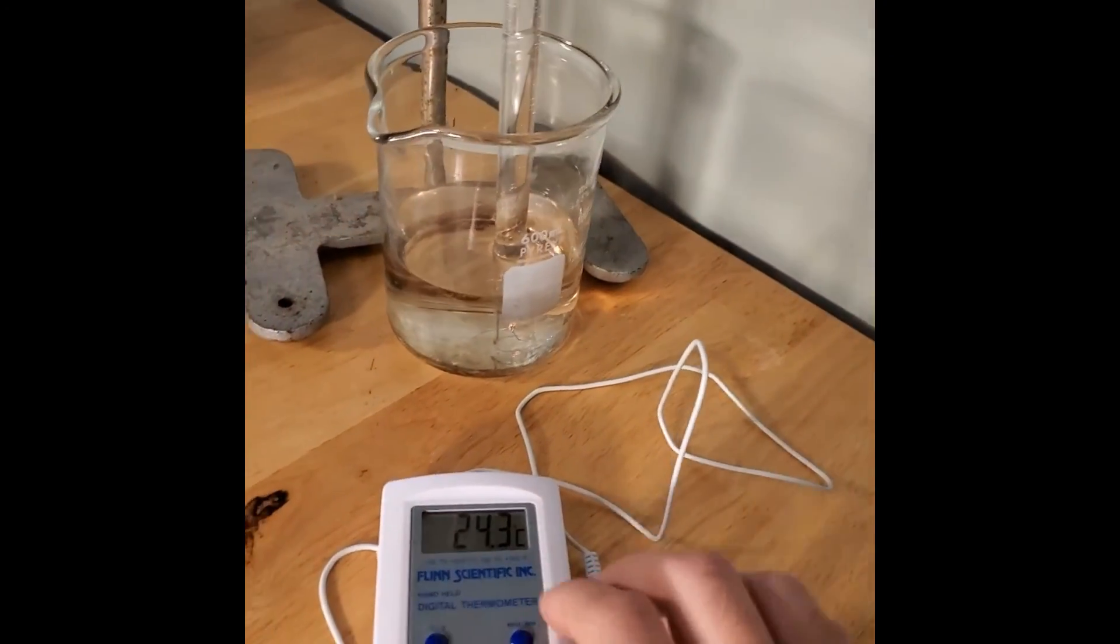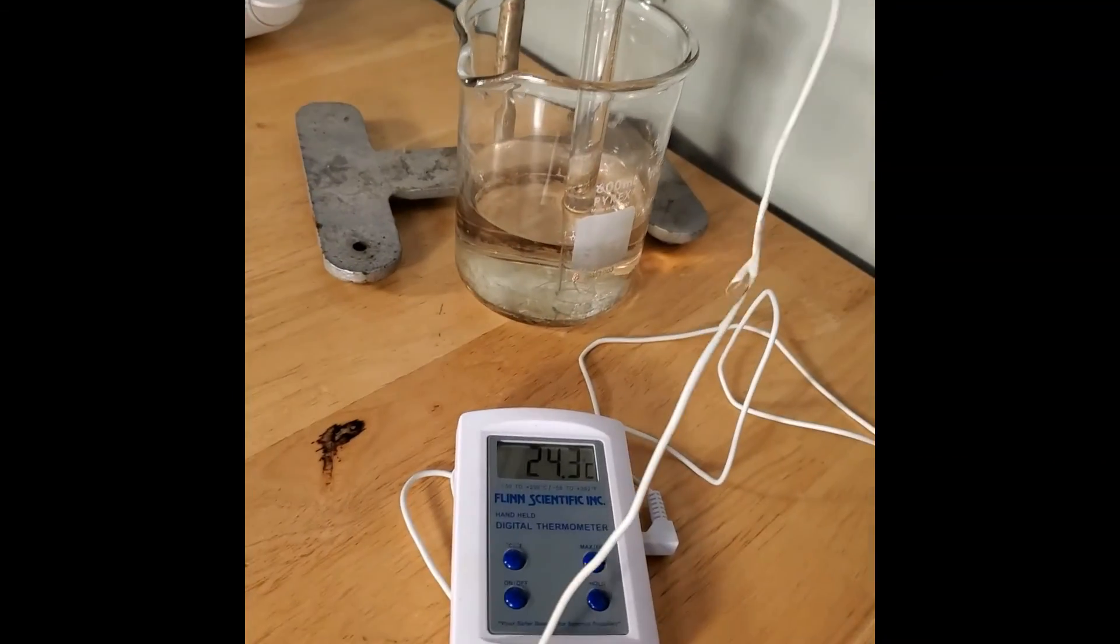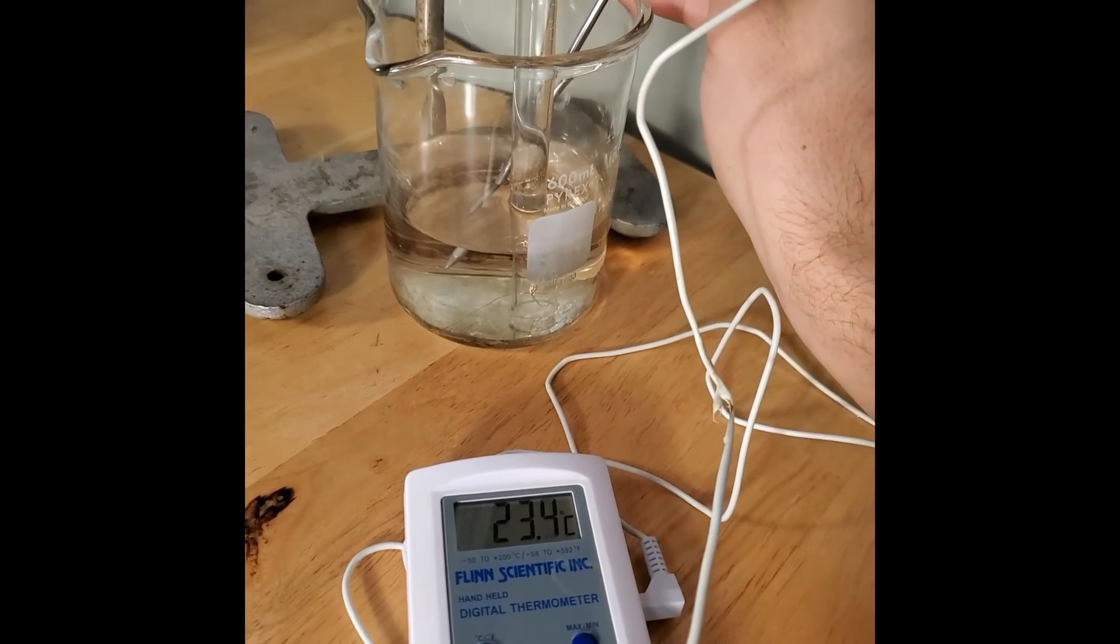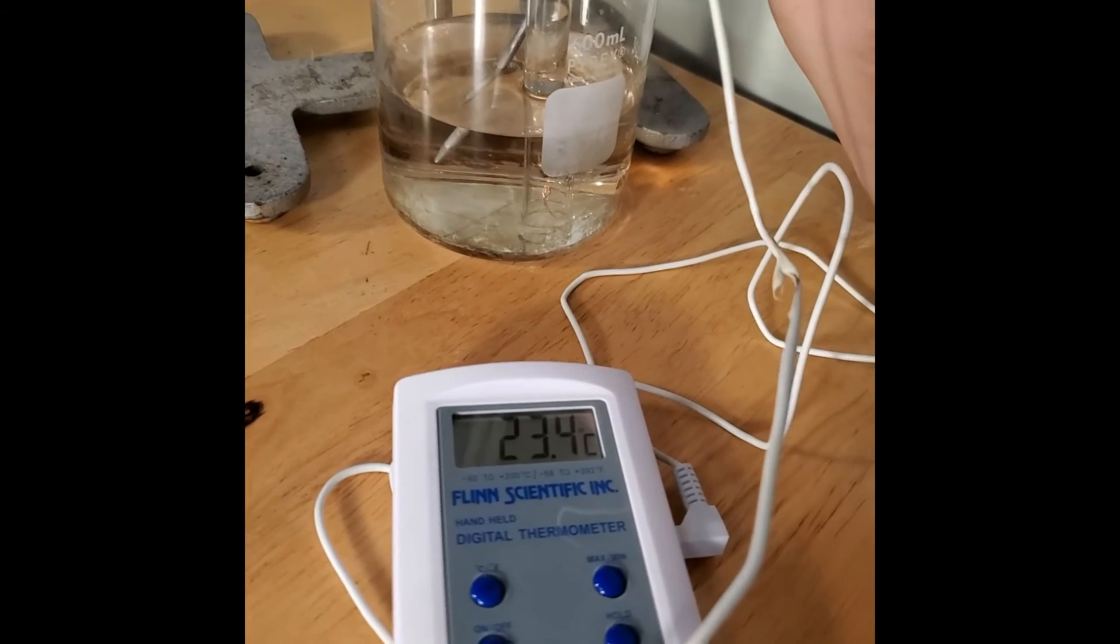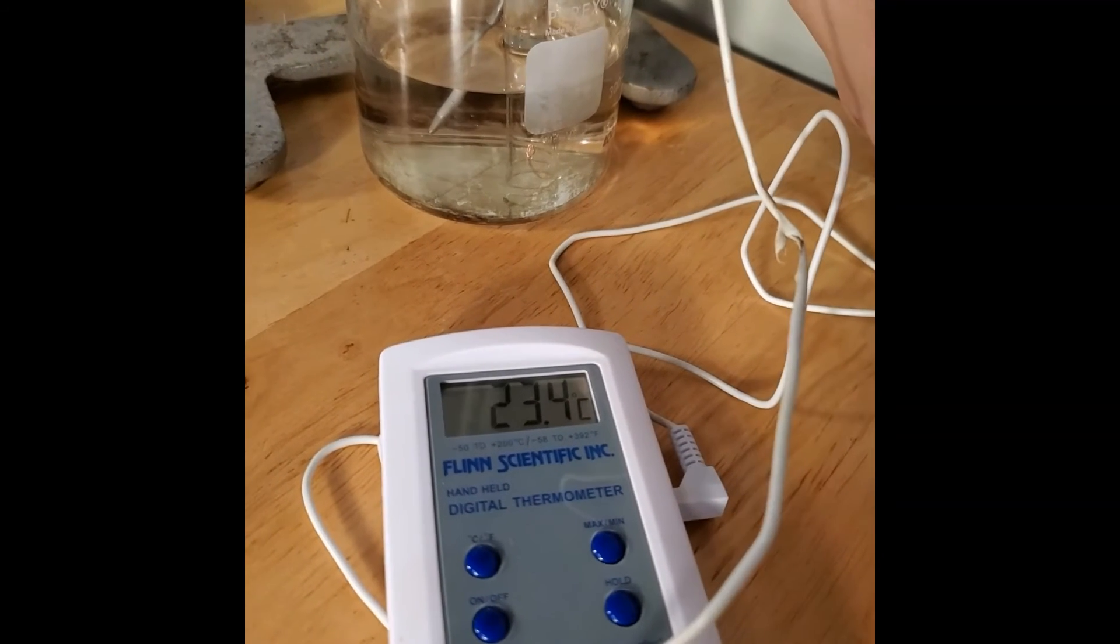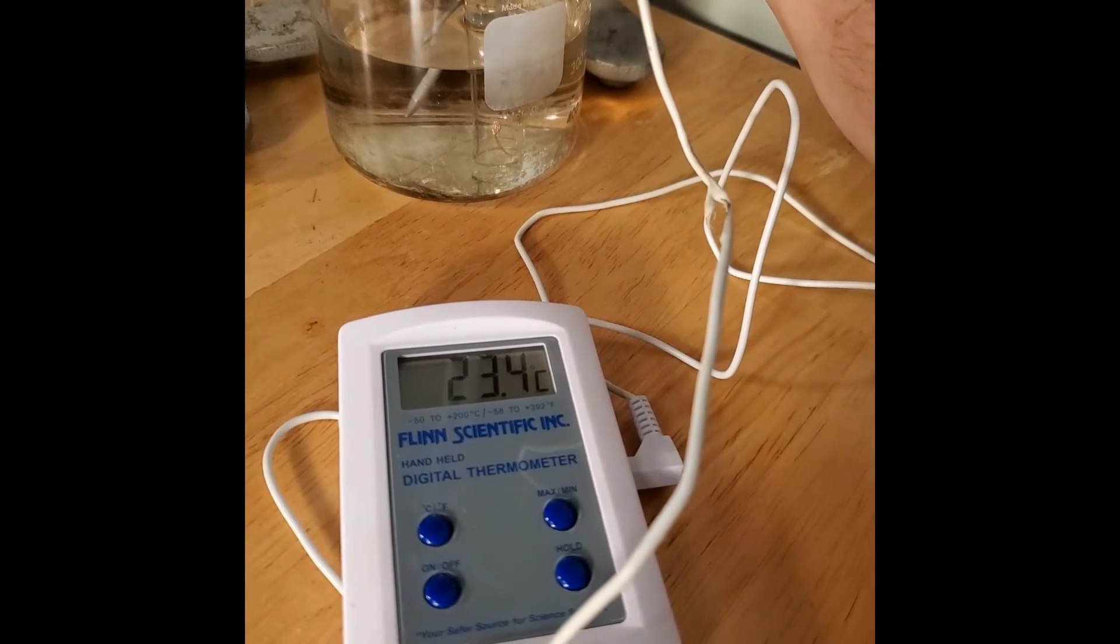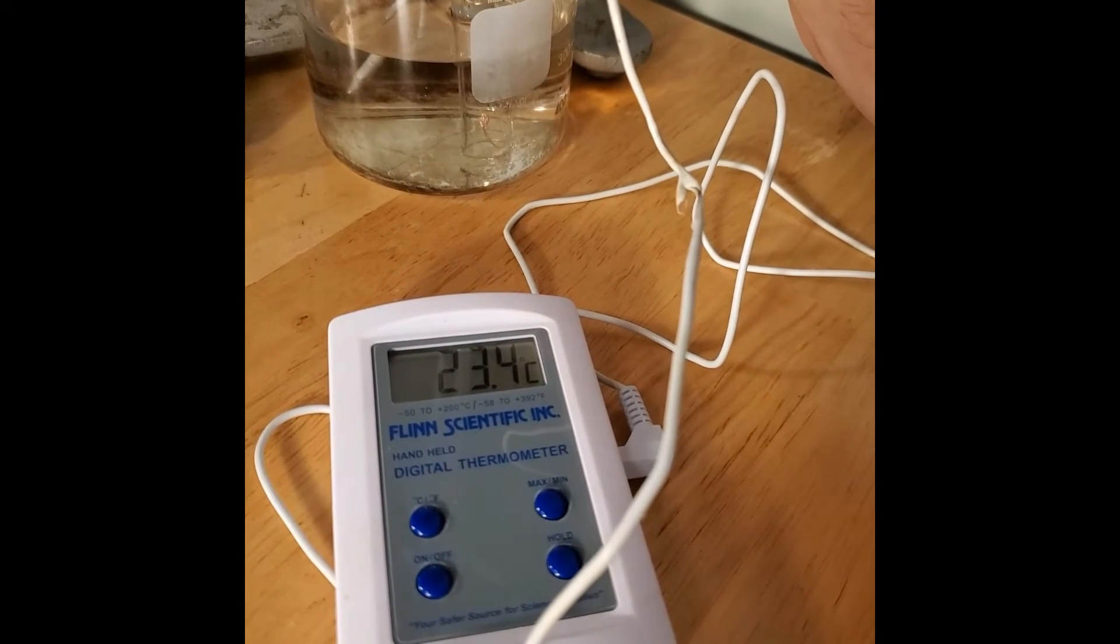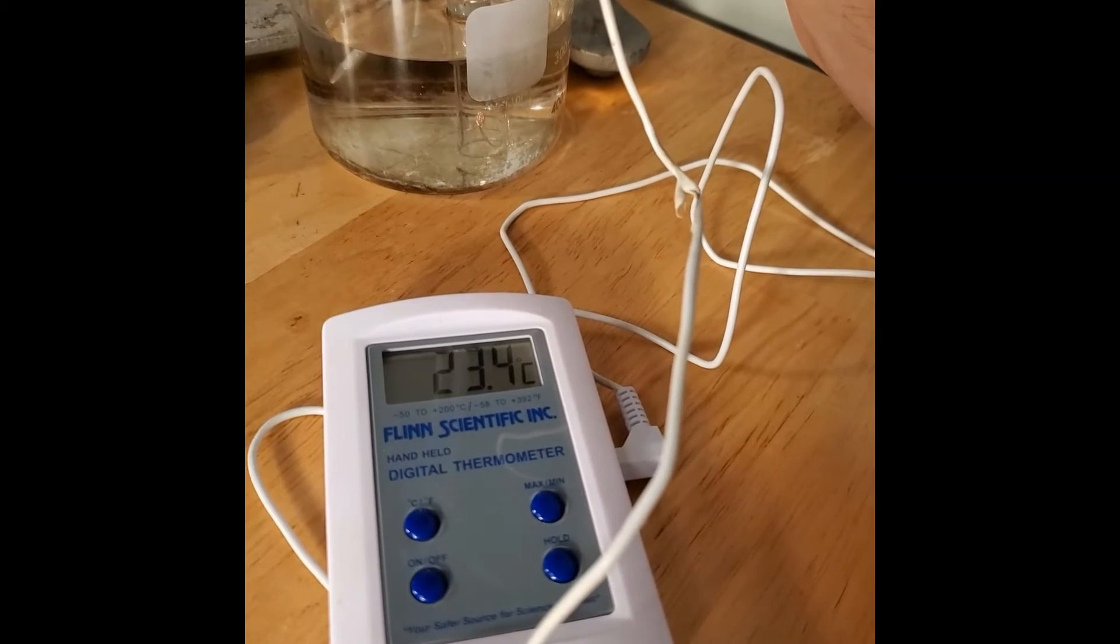So all I'm going to do is I'm going to use my temperature probe and I'm going to take the temperature of the water. Now you might be saying, well, why don't we take the temperature of the air, right, the gas? Well, in this case, it is the water molecules coming from the liquid water. So we're going to be using the temperature of the water. So it looks like 23.4 degrees Celsius is the number we're going to be using.